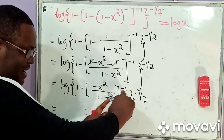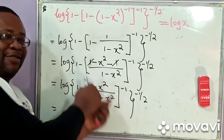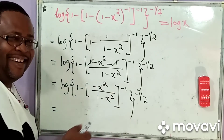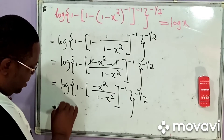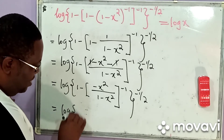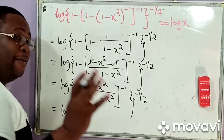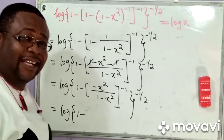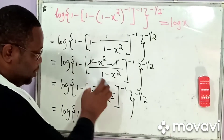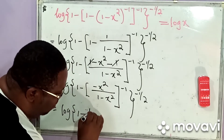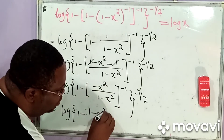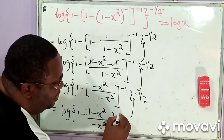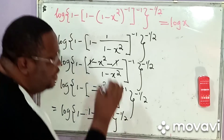Now, this negative 1 here will cause this expression to invert — we say to invert. So this simply becomes equal to the logarithm, and then I'm having 1 minus. Because of the power here, negative 1 — that's the laws of negative exponents — the rule of this will turn. So I simply have 1 minus x squared divided by negative x squared, and then I'm now having negative 1 over 2.